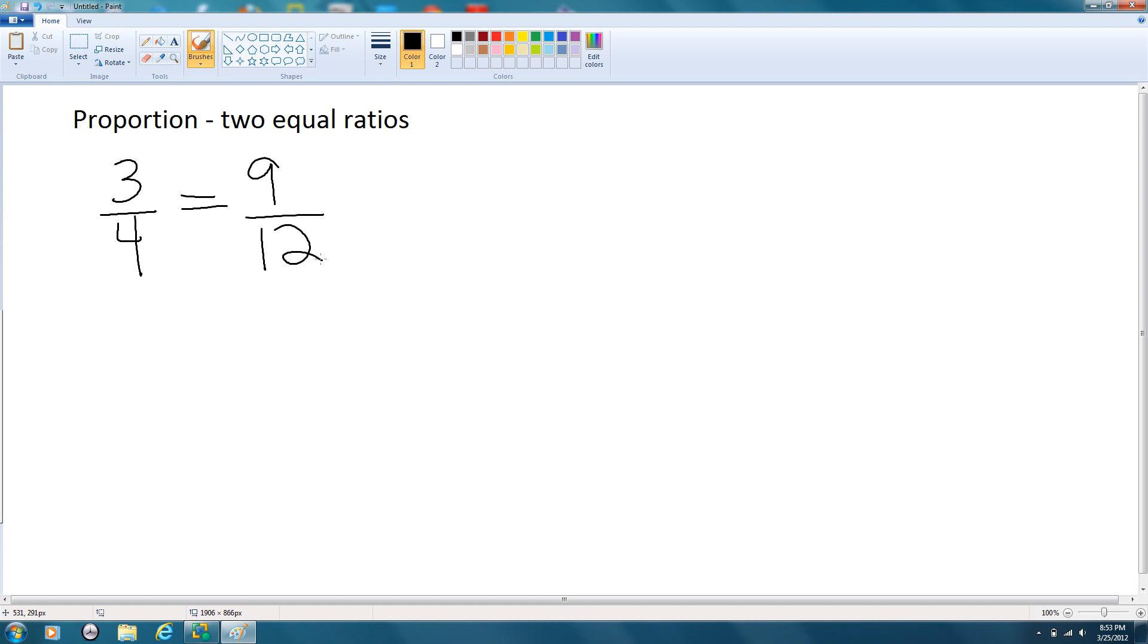Now the neat thing about these is that I can do something called cross products. Let's say I have three-fourths and I know it's equal to something else, but I'm not given the full thing. I'm given that it's equal to 15 over X. Well, there's this property called cross products.